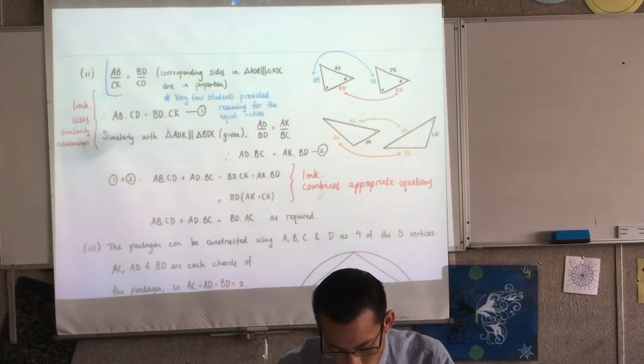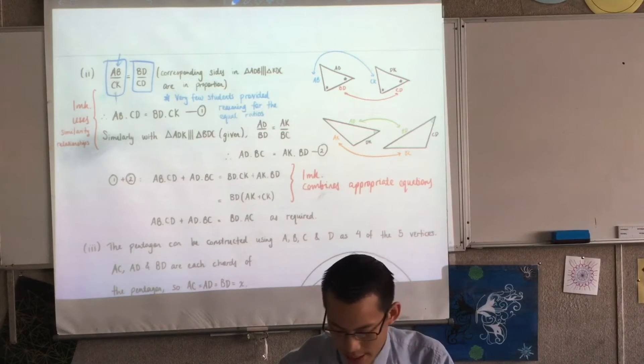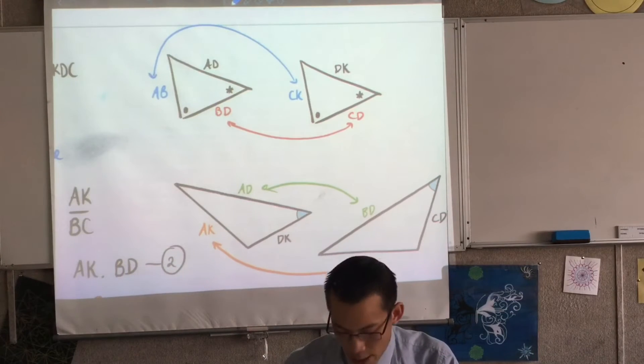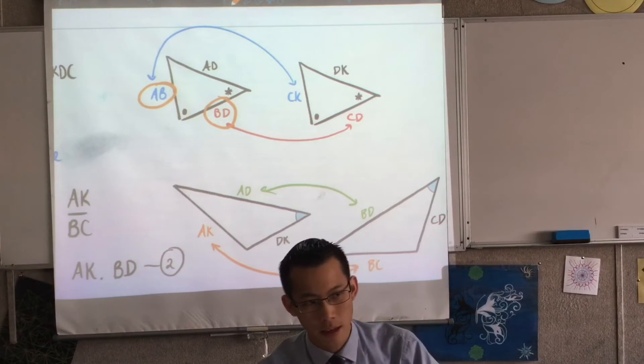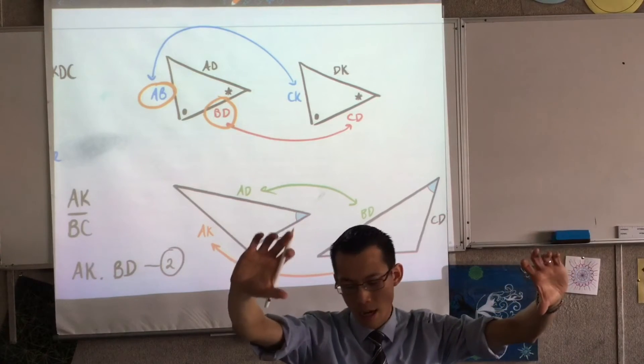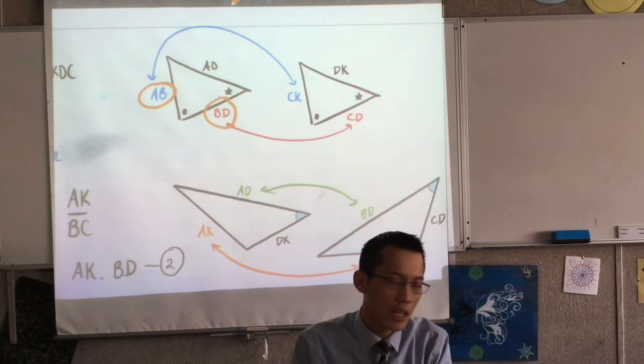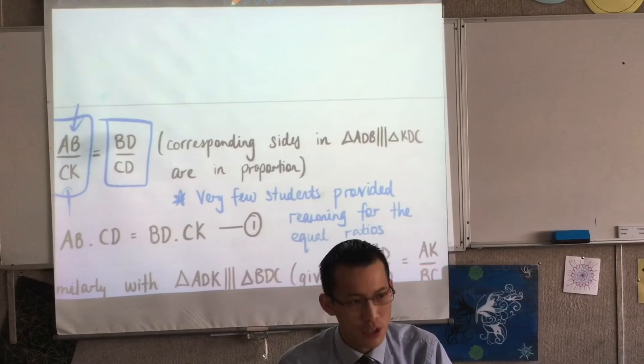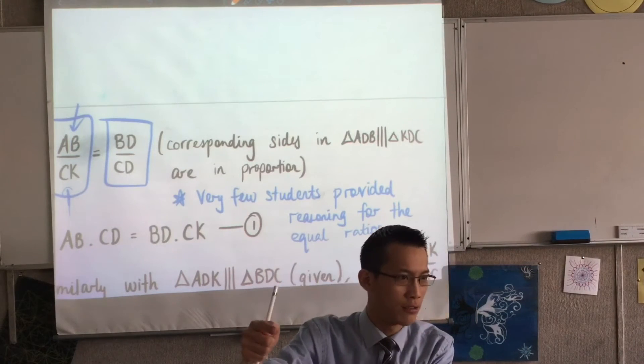Some people, when they write out this relationship here, instead of saying AB on CK, you can see why I've got AB on CK, right? What they might have said was something like AB on BD. Now, here's the thing. If you think about what the fractions are, if you match up AB, BD, and CK, CD, it's actually an equivalent set of fractions. But it doesn't match the reasoning, because they're not corresponding sides in different triangles. They're sides in the same triangle.